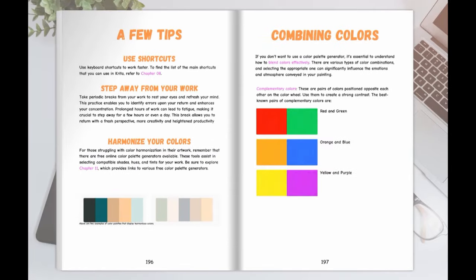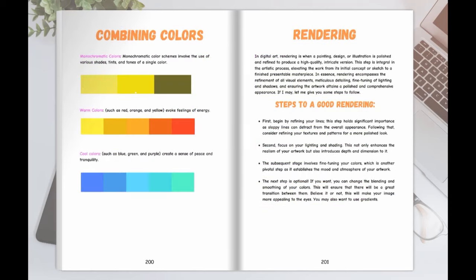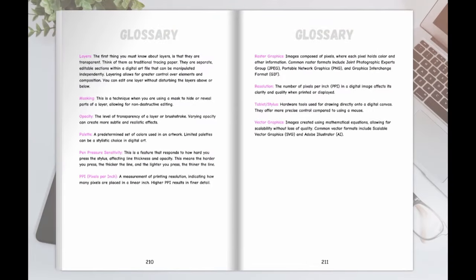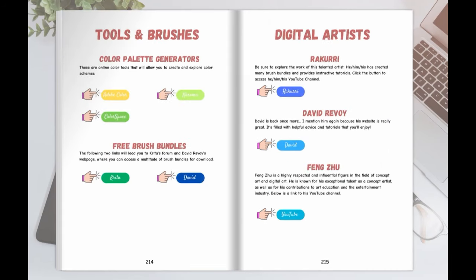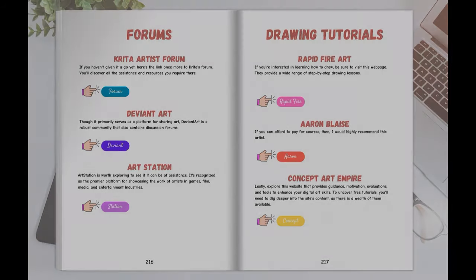If you are struggling with coloring, there is a dedicated section on how to harmonize colors, along with another section outlining the steps to achieve a perfect rendering. Chapter 10 explains most of the basic digital art terms, while Chapter 11 provides useful and, I hope, valuable clickable links to free online tools. These tools will assist you in creating stunning color combinations, connecting with fellow Krita artists, and accessing educational websites for learning how to draw and much more.